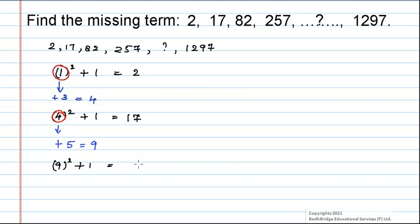We will get 81 plus 1 which is equal to 82. Now add 9 with the next odd digit which is plus 7 and it is equal to 16.